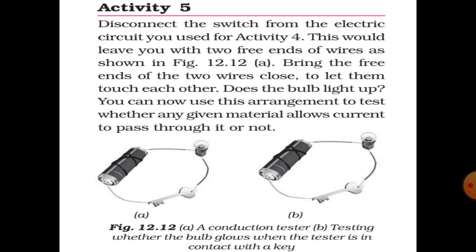Disconnect the switch from the electric circuit, leaving two free ends of wire. Bring the free ends of the two wires close together and let them touch each other. Does the bulb light up? You can now use this arrangement to test whether any given material allows current to pass through it or not.